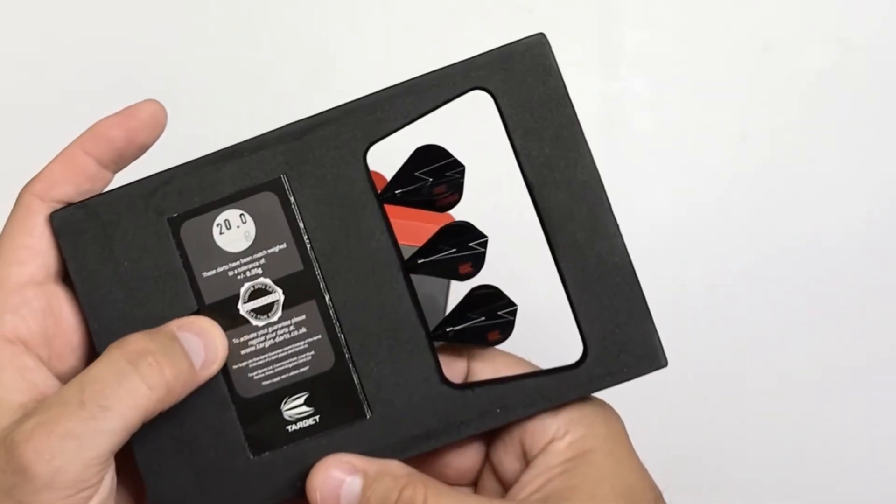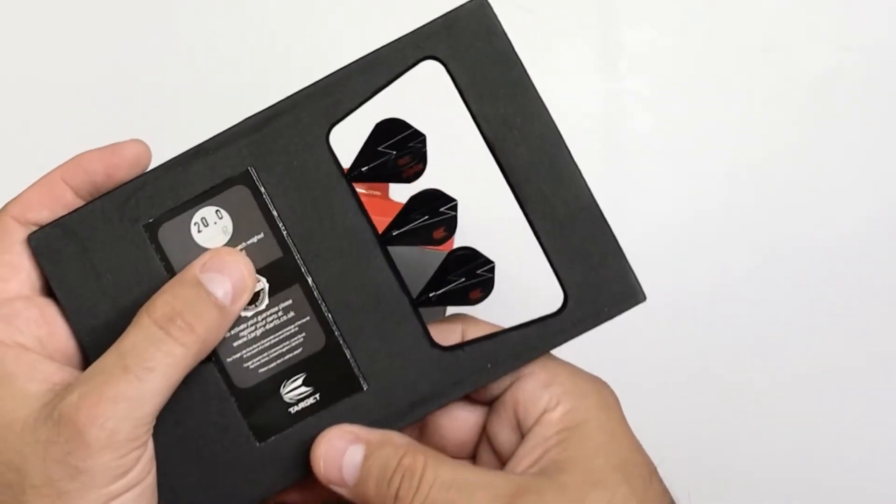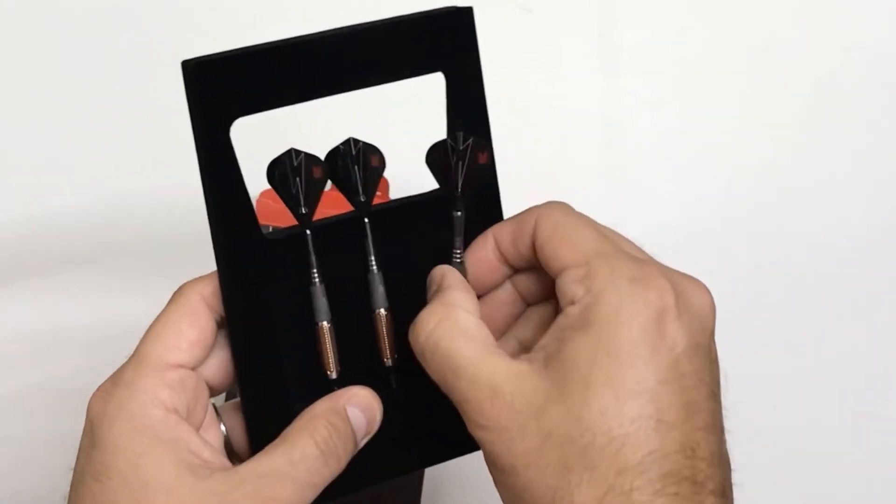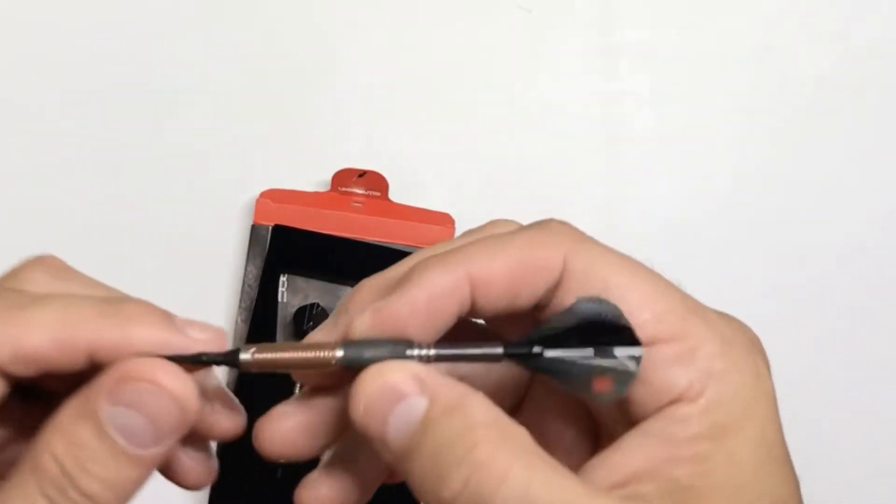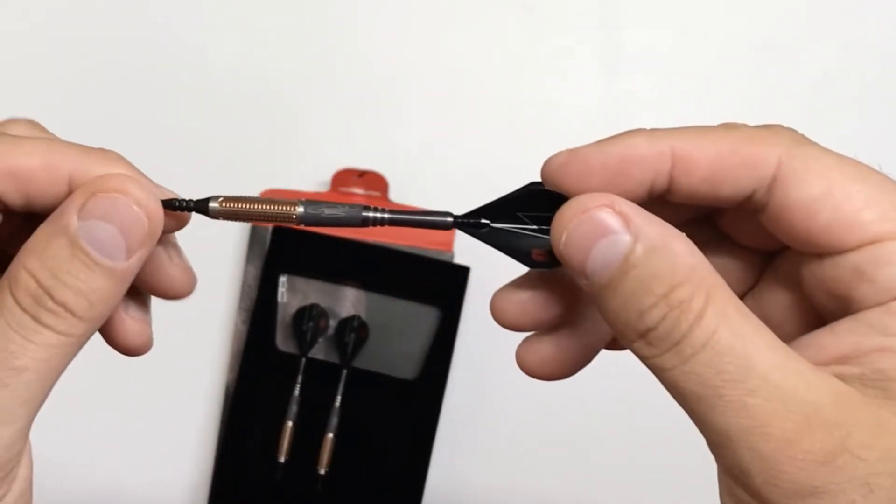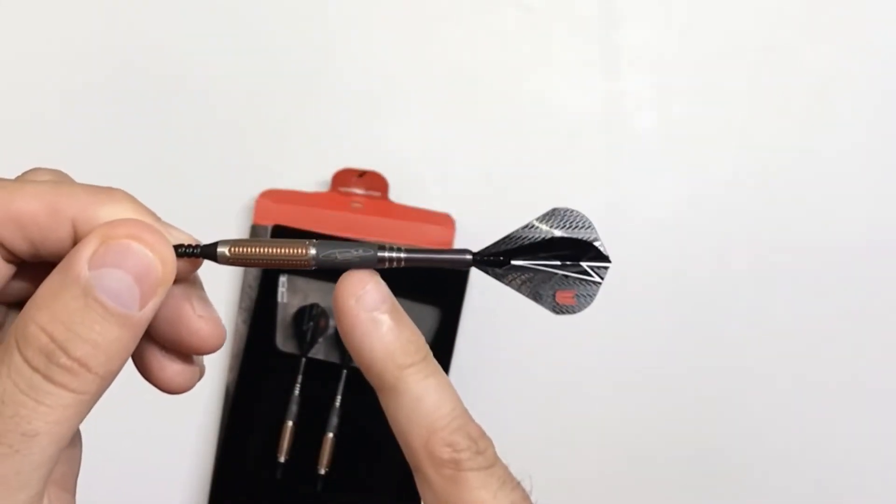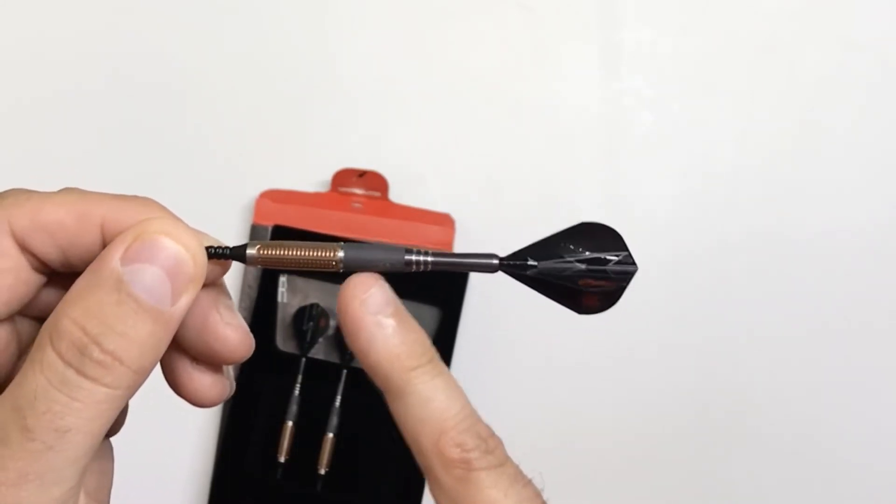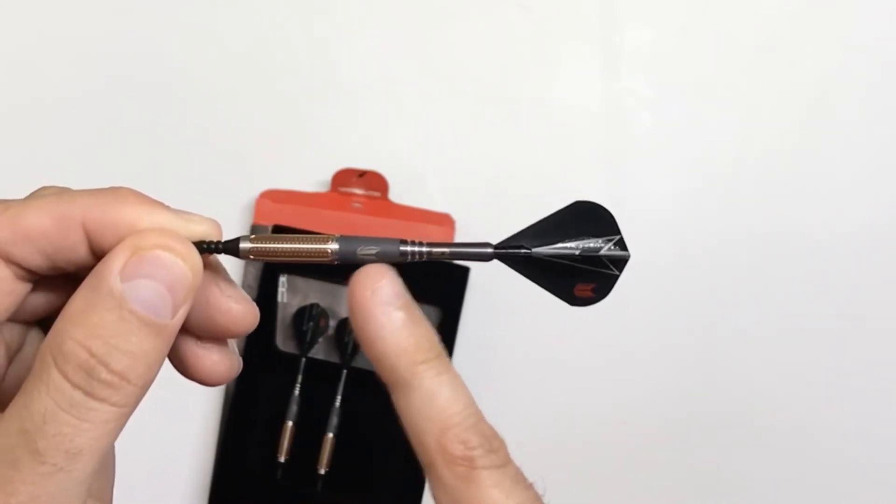Got the little card there, find the weight 20 grams there. Take a closer look at one of the darts here. You can see here's the sandblasted rear they were talking about. Has Phil's name etched in it, Phil's signature there, and has a Target logo etched over here.